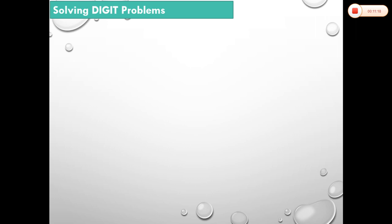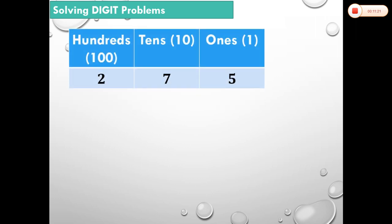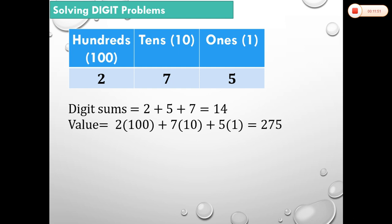Now let's try digit problems. In solving digit problems, we have to consider the place values of each digit. In the number 275, 2 is in the hundreds place, 7 is in the tens place, and 5 is in the ones place. The digit sum is 2 + 5 + 7 = 14, but its value is determined by 2 × 100 + 7 × 10 + 5 × 1 = 275.